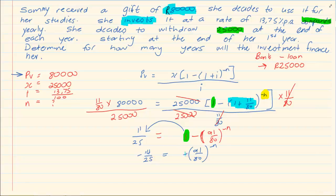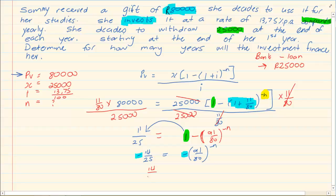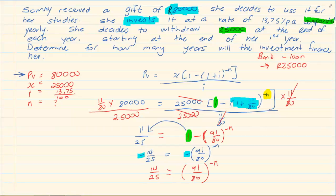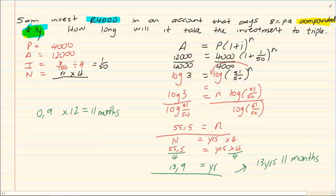And we have negative 14 over 25 is equal to negative 91 over 80 in brackets to the power of minus n. Now, this negative, because it is on both sides, you can simply make it a positive. Or, if you feel uncomfortable doing that, then it is basically dividing by a negative. So, we end up with 14 over 25 is equal to 91 over 80 to the power of minus n. Now, going back to your n's. When we are trying to calculate a n that is an odd power, we are going to use the logs.